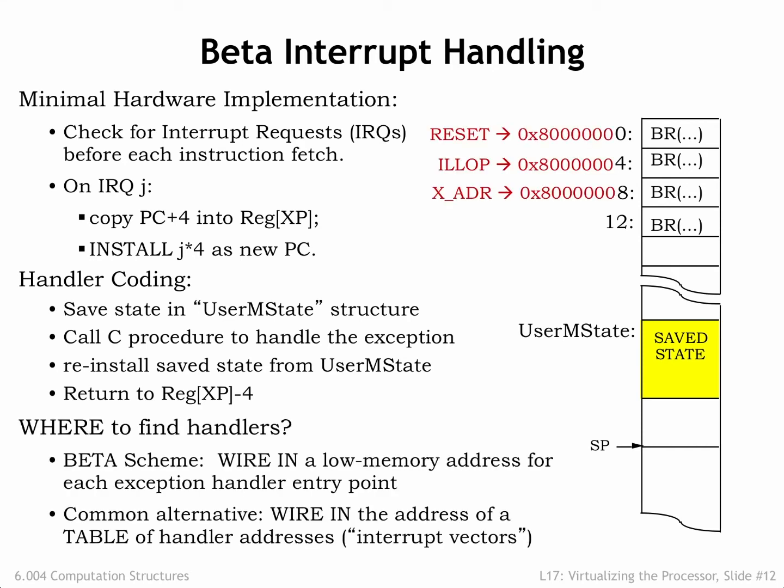In our simple beta implementation, the first instructions for the various interrupt handlers occupy consecutive locations in main memory. Since interrupt handlers are longer than one instruction, this first instruction is invariably a branch to the actual interrupt code. The reset interrupt, asserted when the CPU first starts running, sets the PC to 0. The illegal instruction interrupt sets the PC to 4. The timer interrupt sets the PC to 8, and so on. In all cases, bit 31 of the new PC value is set to 1 so that handlers execute in supervisor or kernel mode, giving them access to the kernel context.